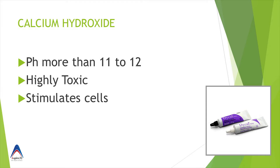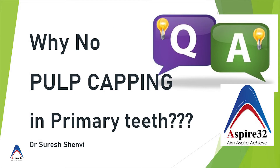Another most important factor in pulp capping is the use of calcium hydroxide, which has a long track record of success. A few important points to remember: the pH of calcium hydroxide is 11 to 12, meaning it is highly alkaline. When you apply it on tissue, it causes necrosis in the topmost layer, but it also stimulates cells to deposit dentine.